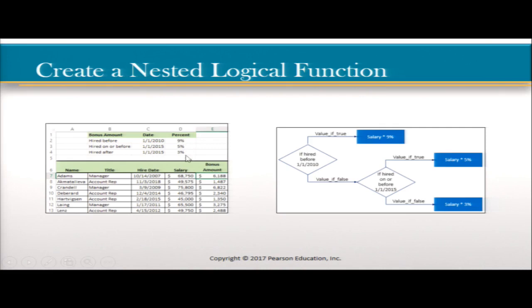They need a formula to meet all these conditions, so they use a nested logical function. Diagrammed out: if hired before 1/1/2010 and it's true, salary increase of 9%. If false, the nested function lives here — it asks another question. If hired on or before January 1st, 2015 and that's true, salary increase of 5%. If false, they get a salary increase of 3%.